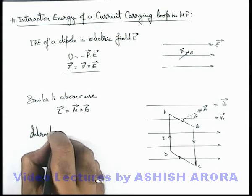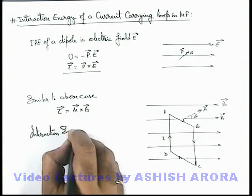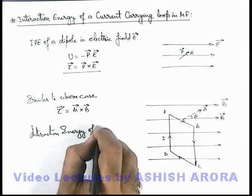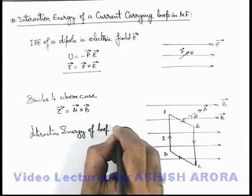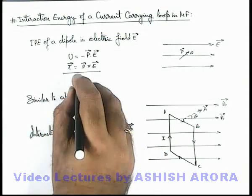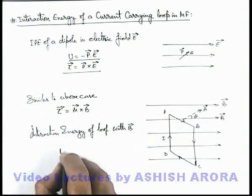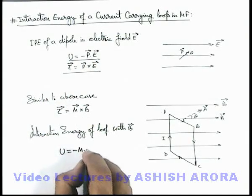Similar to this we can find out the interaction energy of loop with B vector. By using the above relation we can directly write U as minus m dot B.